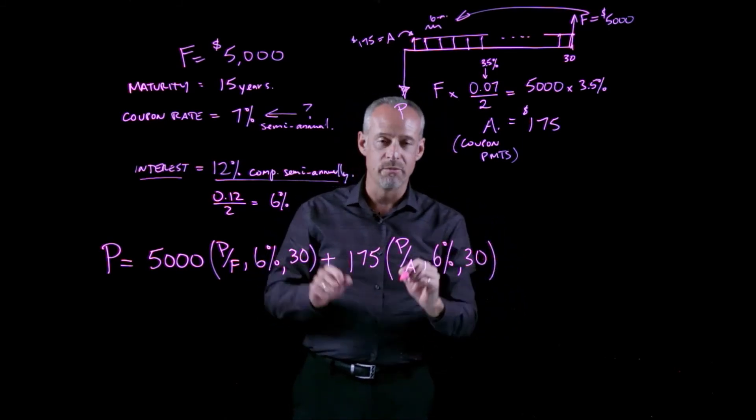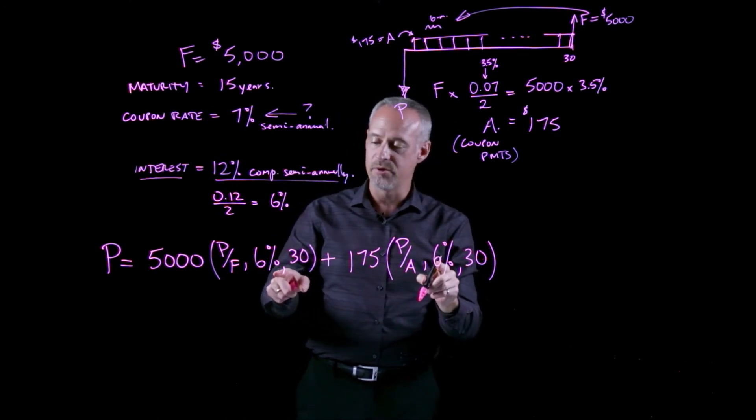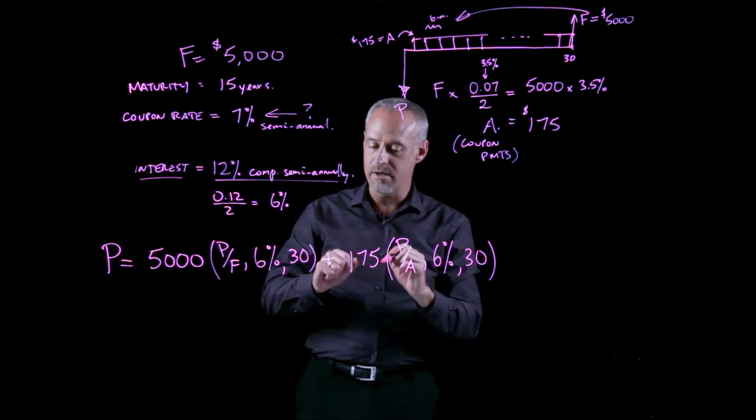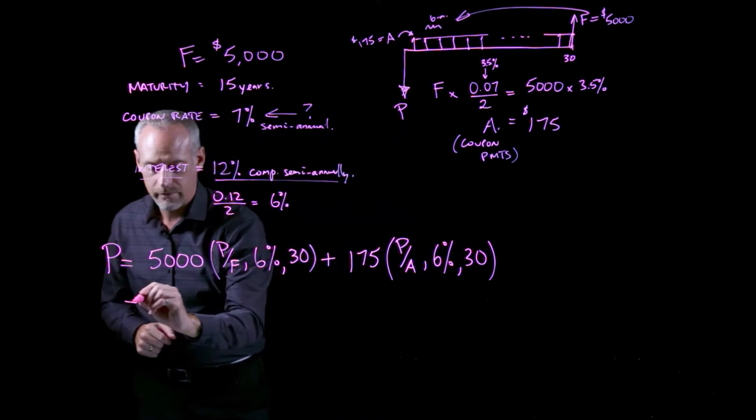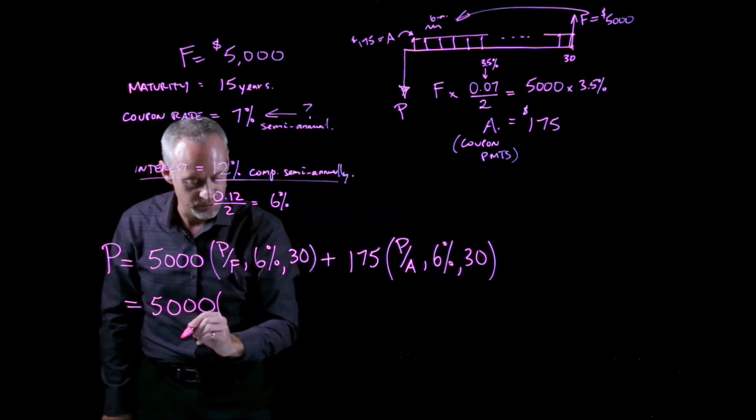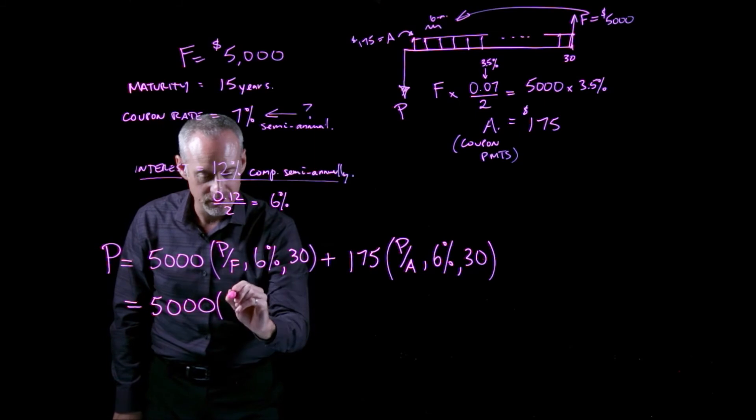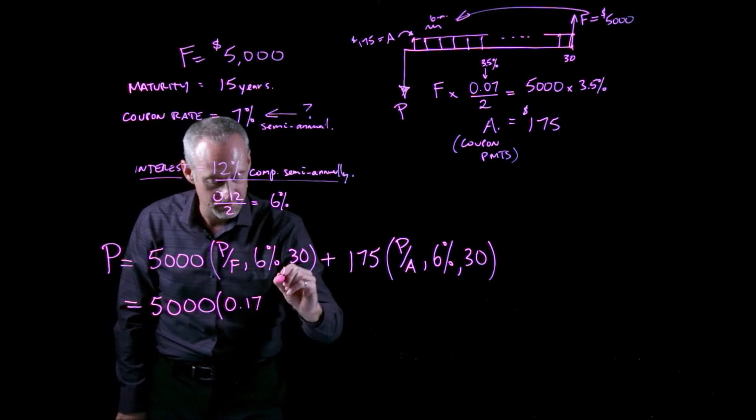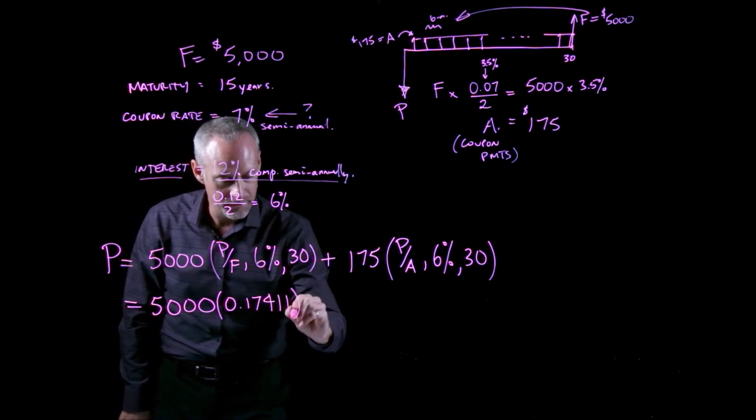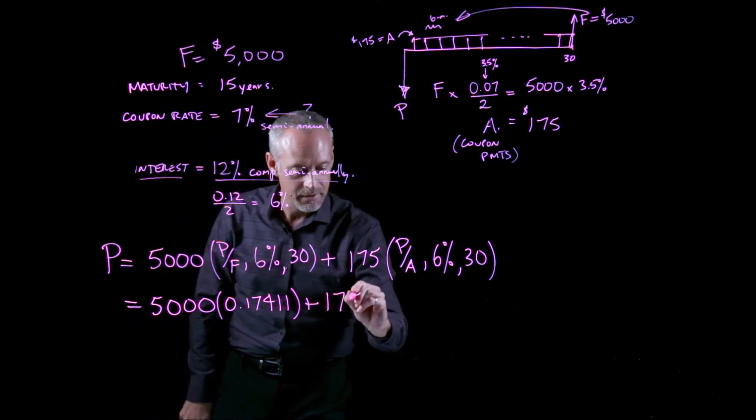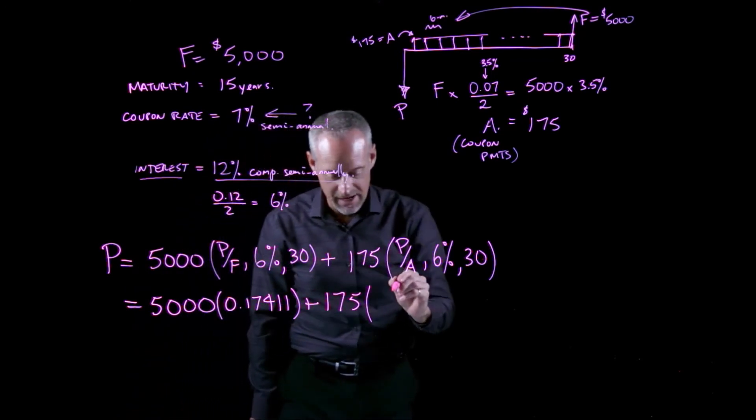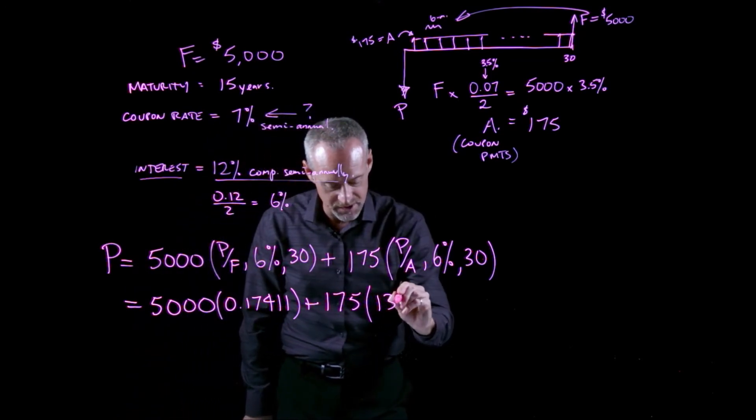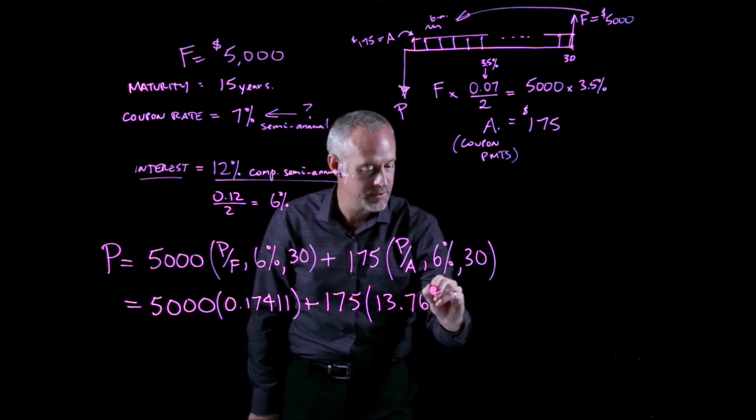If I go to my 6% compound interest table for N equal to 30, I find the following value. My P given F factor is 0.17411 and my P given A factor is 13.765.